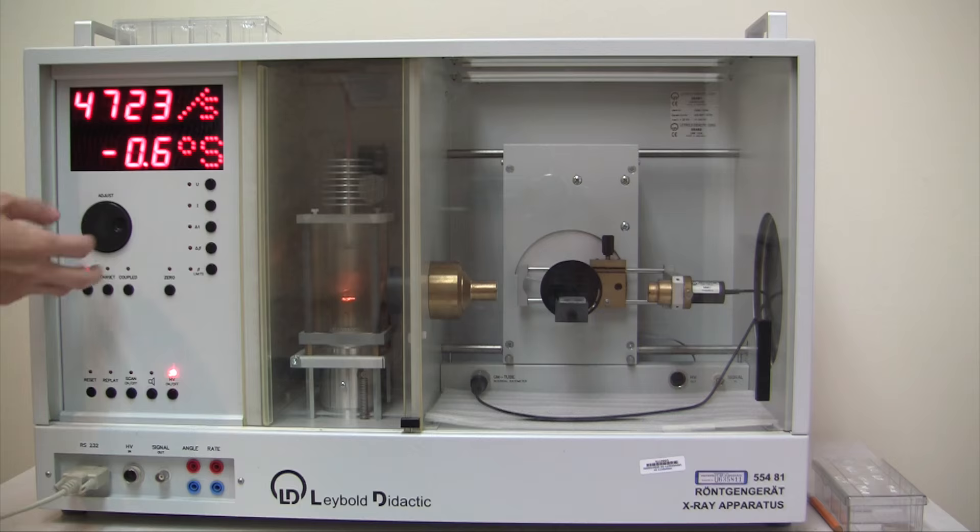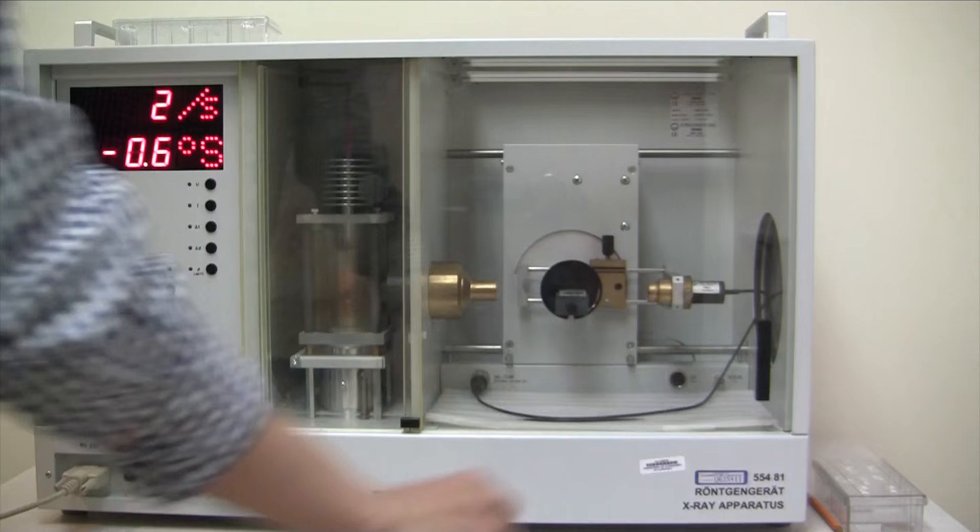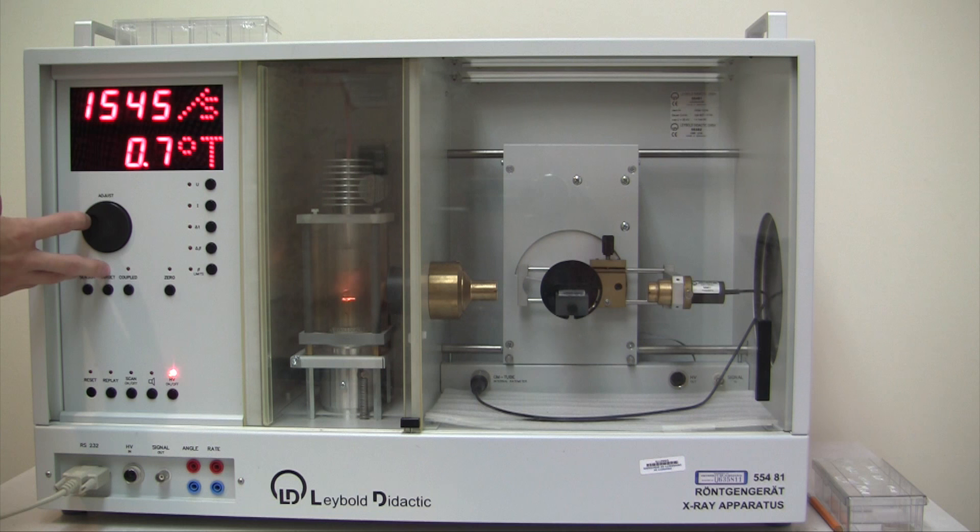Rotate the sensor manually until the X-ray count rate is maximized. Turn off the high voltage, open the sliding window and raise the crystal until it is snug against the stop. Turn on the high voltage and rotate the target until the count rate is at maximum. If the alignment is good, then this count rate should be about half of the original count rate without crystal in place.